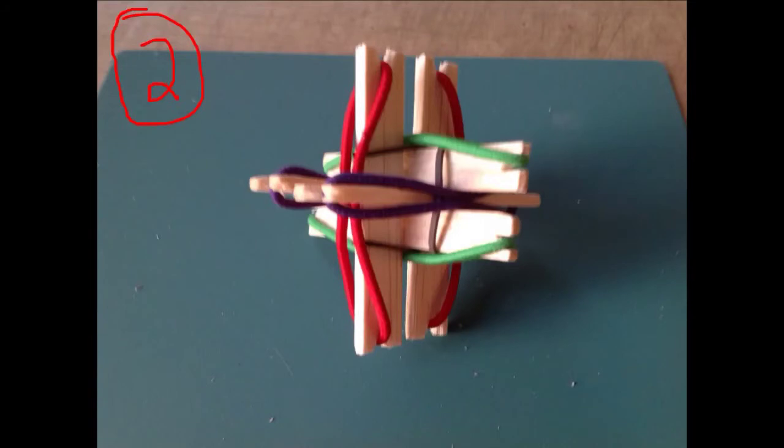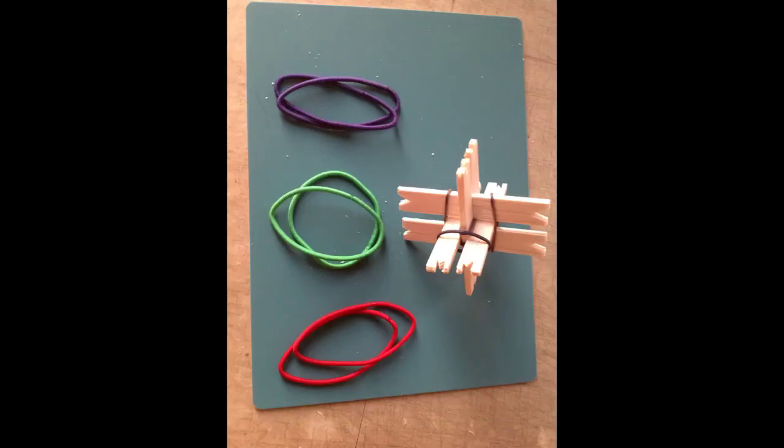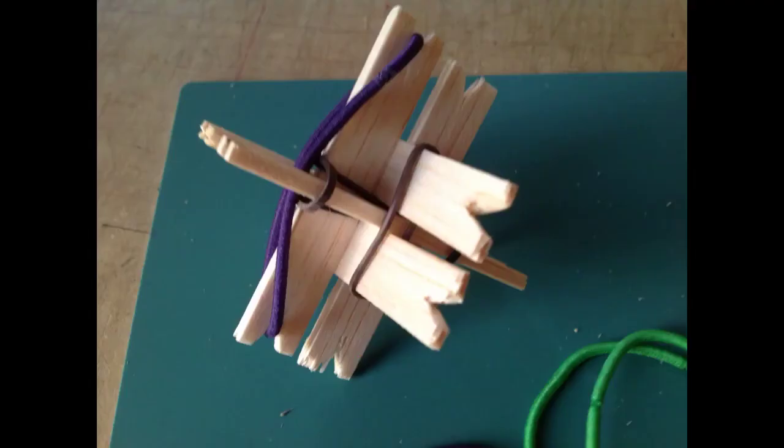The second step is to begin to attach the larger colored rubber bands. They have two sets of placements, and we'll begin with the first. So you just notice that you have two purple, two green, two red. Let's begin with a purple rubber band. You feed it through a pair of the struts, right down between the middle of them, and then each end of the rubber band goes over a notch.